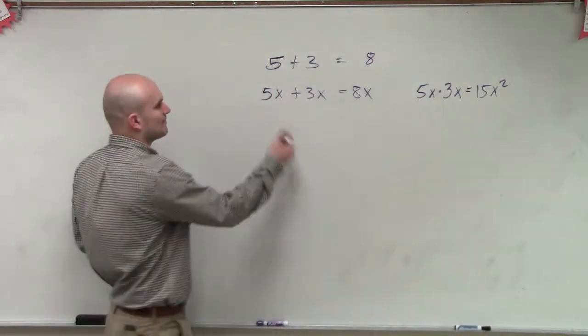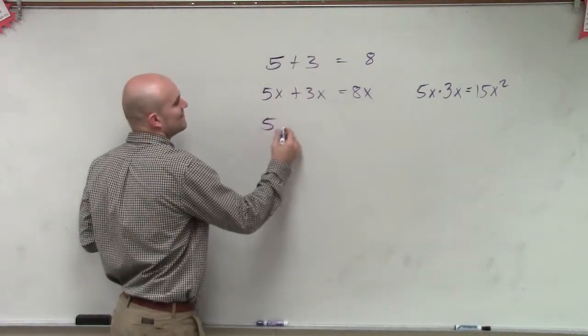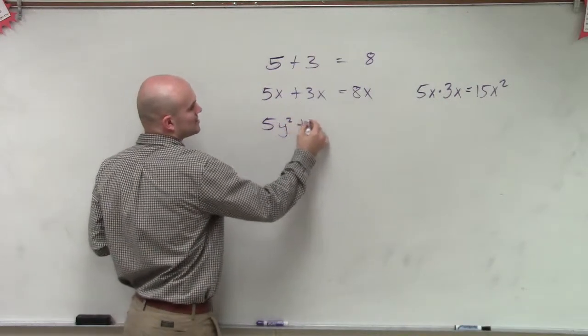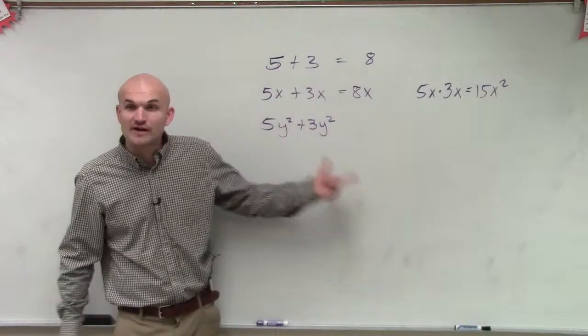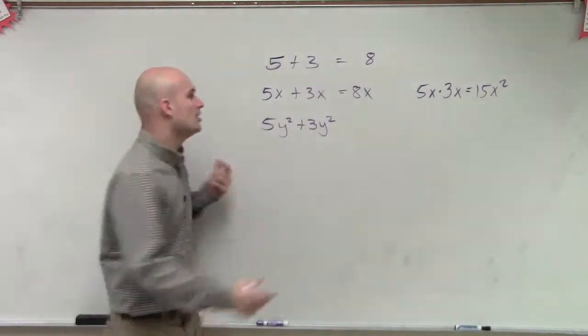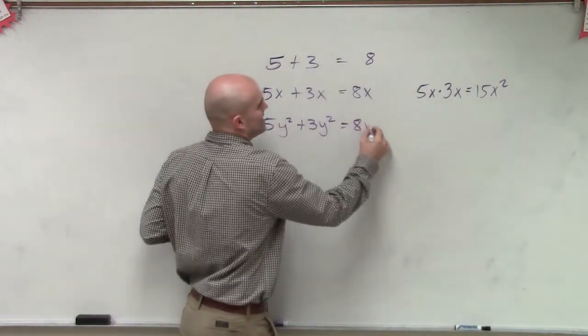I'm just going to go through this one more example. What about if I said 5y squared plus 3y squared? Since these have the same variable factors of y squared, we can combine them to give you 8y squared.